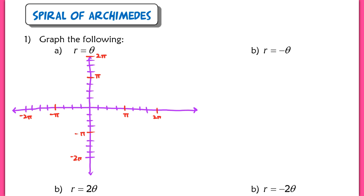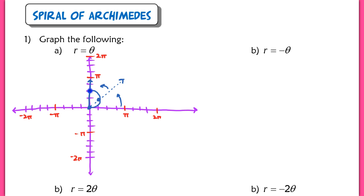Let's actually try to graph this. We start with theta equals 0 — we always want to find the zeros of the function — so when theta is 0, r equals 0. When theta increases to pi over 4, we are pi over 4 units away from the pole. So we have the point (pi/4, pi/4). As the spinner continues to rotate counterclockwise to pi over 2, we end up at r equals pi over 2. Let's connect these points — as it rotated from 0 to pi over 4, the r value increases steadily, and continues to increase until we get to pi over 2 units.